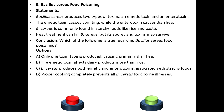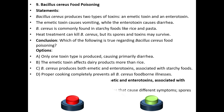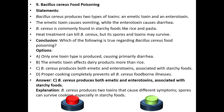Conclusion: Which of the following is true regarding Bacillus cereus food poisoning? Option A: Only one toxin type is produced causing primary diarrhea. Option B: The emetic toxin affects dairy products more than rice. Option C: Bacillus cereus produces both emetic and enterotoxin associated with starchy foods. Option D: Proper cooking completely prevents all Bacillus cereus foodborne illness. The answer is C. Explanation: Bacillus cereus produces two toxins that cause different symptoms, and spores can survive cooking especially in starchy foods.